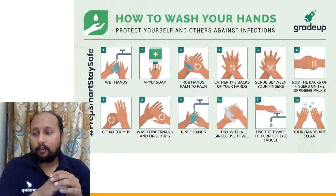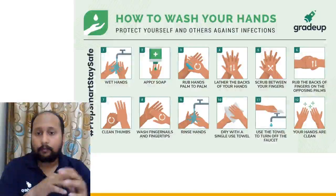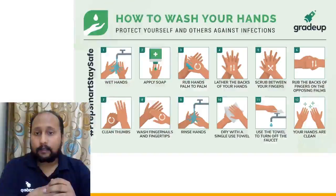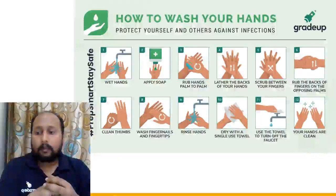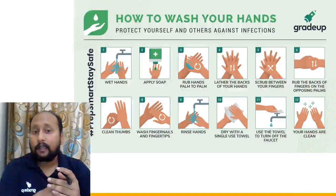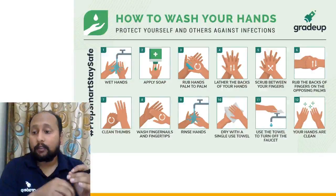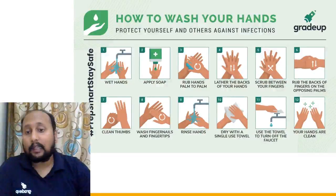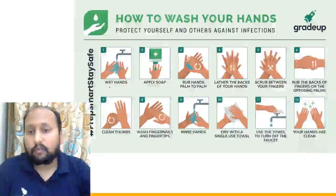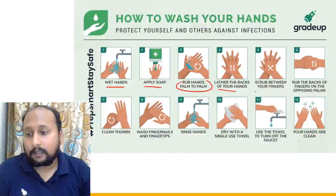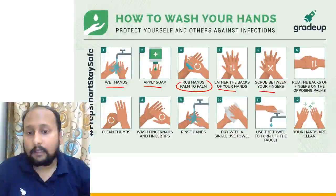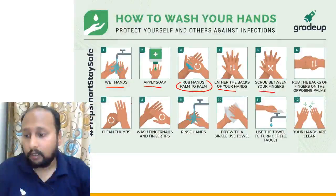Before starting today's session, I'd like to share a thought from the WHO on how to wash your hands to protect yourself against infections. Here are the 12 steps: wet your hands, apply soap, rub palm to palm, lather the back of your hands, scrub between fingers, rub backs of fingers on opposing palms, clean thumbs, wash fingernails and fingertips, then rinse and dry with a single-use towel.